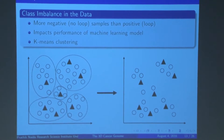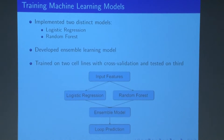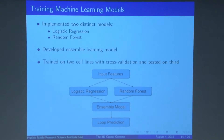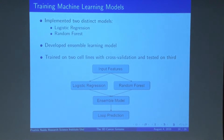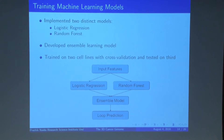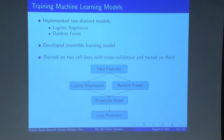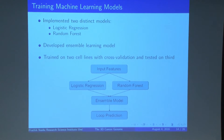We tested two distinct models: logistic regression and random forest models. However, we noticed from preliminary analysis that both of these models had their own strengths and weaknesses. So in order to create a more powerful and comprehensive prediction framework, we created an ensemble learning method that combined the strengths of both individual models. We trained them on two cell lines and then cross-validated and tested on the third.